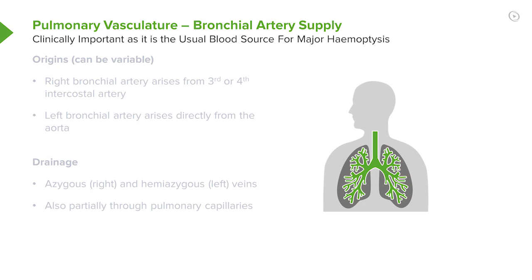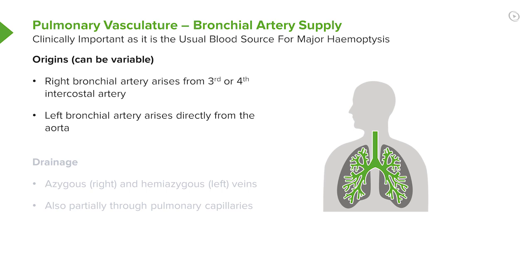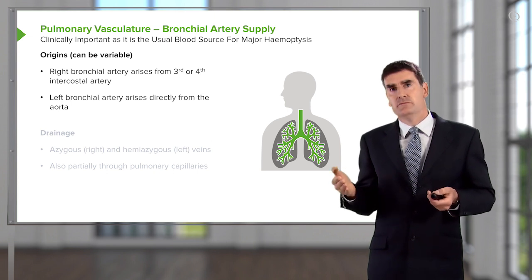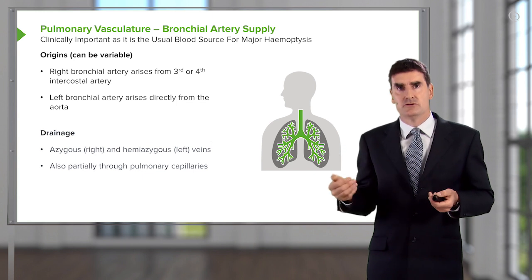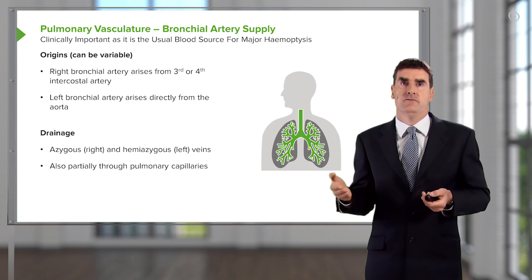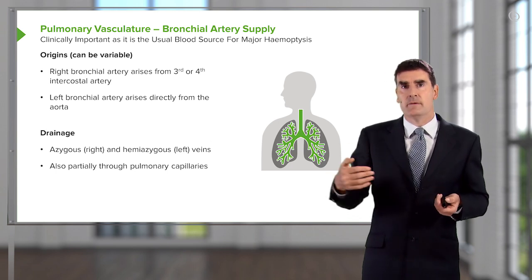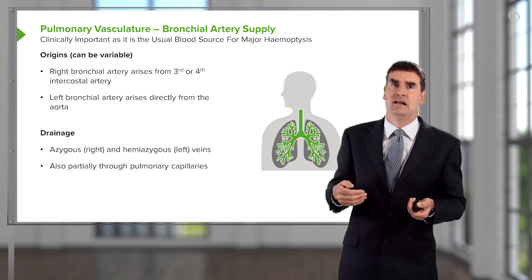The bronchial arteries arise from the systemic circulation, and where they come from varies quite a lot between people even in normal circumstances. The left bronchial artery generally comes from the aorta, but may not. The right bronchial artery arises from the third or fourth intercostal artery, but there are often abnormal arrangements where the bronchial artery arises directly from the subclavian arteries, for example. The bronchial veins drain back into the systemic venous circulation, into the azygos and hemiazygos veins. Occasionally, a small amount of blood goes back through the pulmonary capillaries to the left atrium as well.